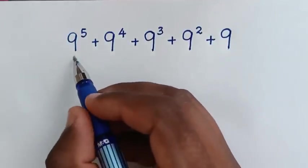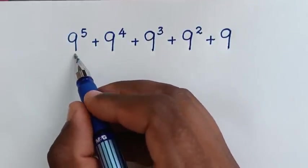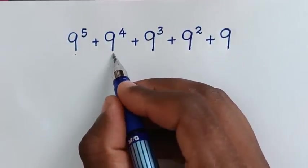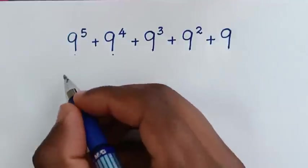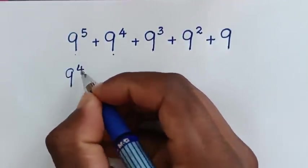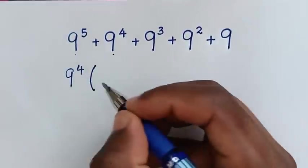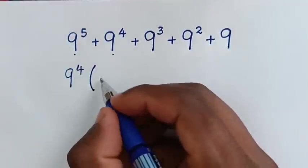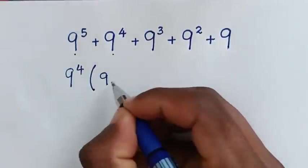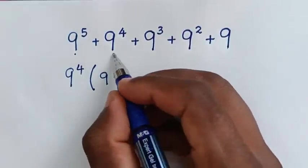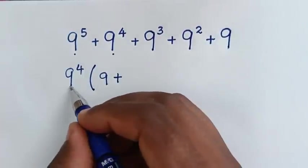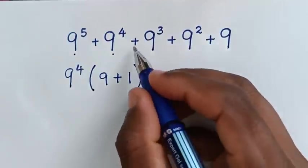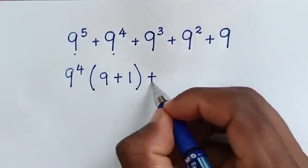Now in the first step, from here 9 power 5 plus 9 power 4, this 9 power 4 is common, so we'll take 9 power 4 out of the bracket. Then 9 power 5 divided by 9 power 4 is 9, then plus 9 power 4 divided by 9 power 4 is 1, bracket.